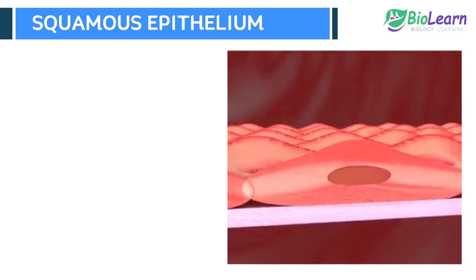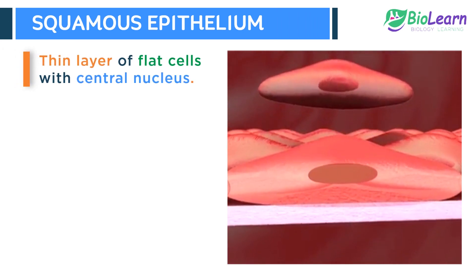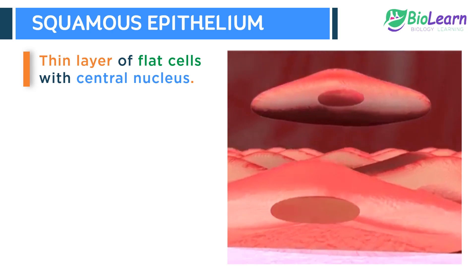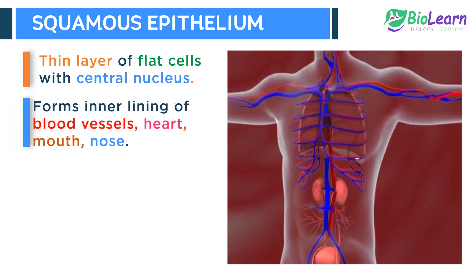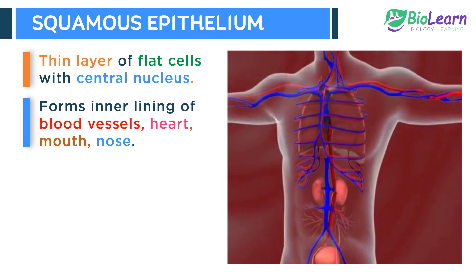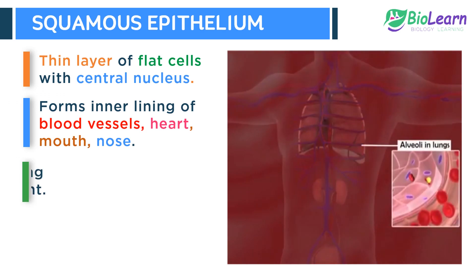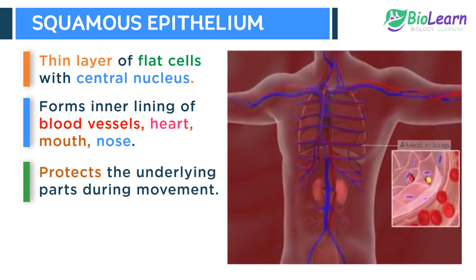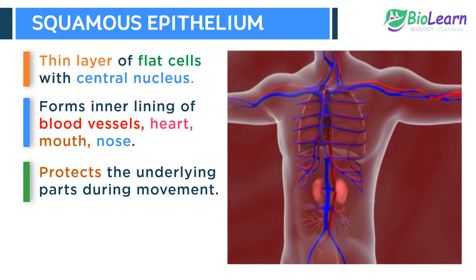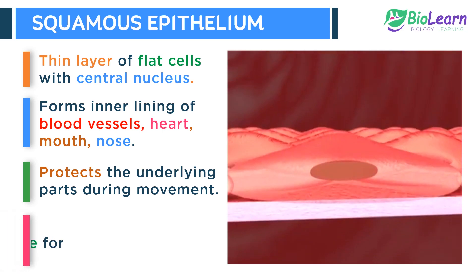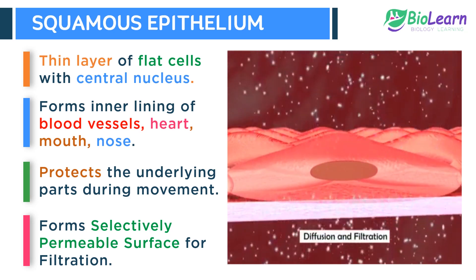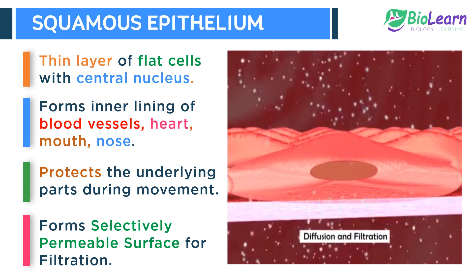Squamous epithelium is made up of a thin layer of flat cells, each with a centrally located nucleus. It forms the delicate inner lining of blood vessels, heart, mouth, and nose. It protects the underlying parts and facilitates the movement in internal organs. It also forms a selectively permeable surface through which filtration takes place.